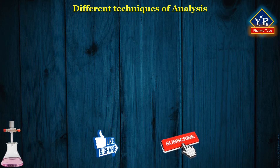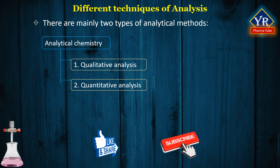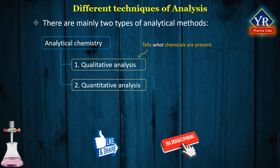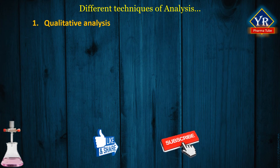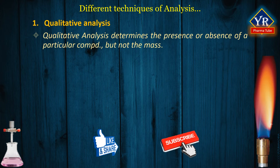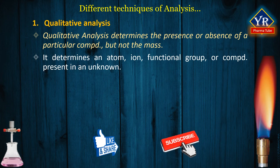Different techniques of analysis. Based upon the determination type, there are mainly two types of analytical methods: qualitative analysis and quantitative analysis. Qualitative analysis tells us what chemicals are present in an unknown sample, and quantitative analysis tells us how much quantity is present. Quantitative analysis is further divided into gravimetric and volumetric analysis. Qualitative analysis is simply identification — it determines the presence or absence of a particular compound but not the mass or concentration. It is the determination of the chemical composition of a sample in which an atom, ion, functional group, or compound is present or absent, but it does not provide information about its quantity.